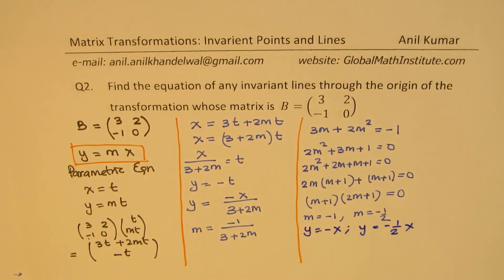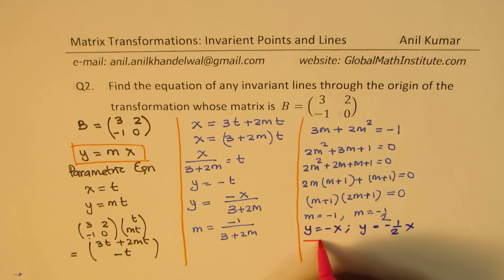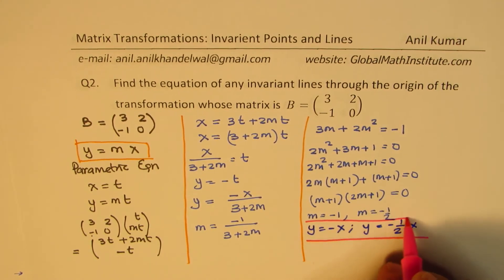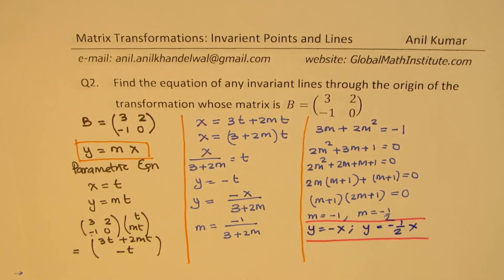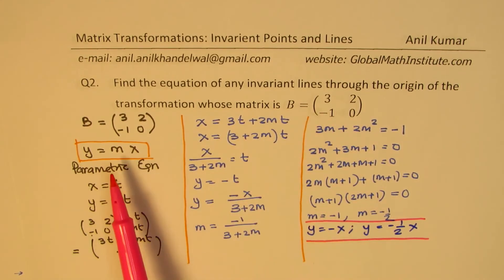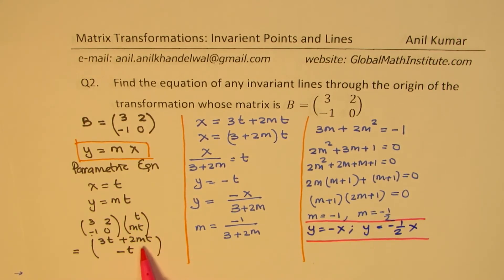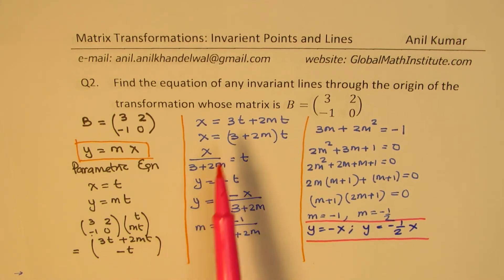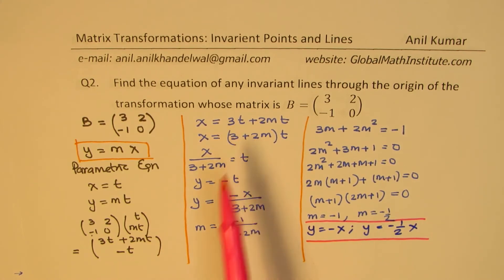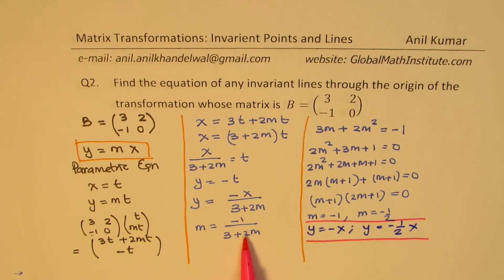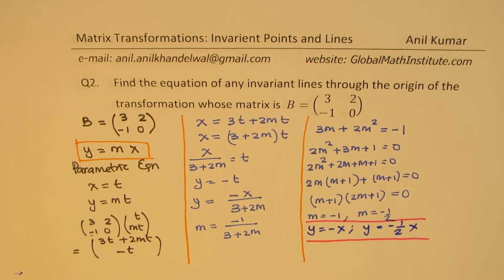That gives us two different values of M. Since we are looking for a line through the origin, the equation has to be Y equals MX. Our solution is Y equals minus X and Y equals minus half X. These are the two invariant lines for the given transformation. The steps are: apply the transformation to the parametric position vector, form two equations from the image, equate slope M, and find the slope for which the image matches the original.